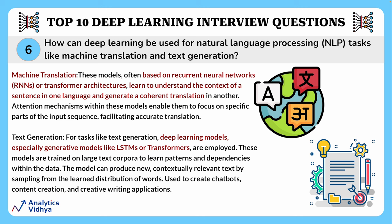For tasks like text generation, deep learning models — especially generative models like LSTMs or transformers — are trained on large text corpora to learn patterns and dependencies within the data. During generation, the model can produce new, contextually relevant text by sampling from the learned distribution of words. This is widely used in chatbots, content creation, and creative writing applications. The power of deep learning lies in its ability to automatically learn hierarchical representations from vast amounts of data, making it a cornerstone in the evolution of NLP.